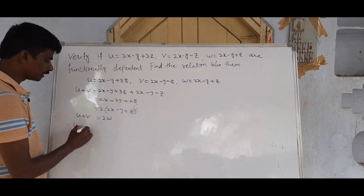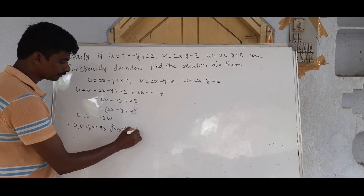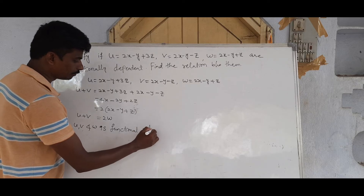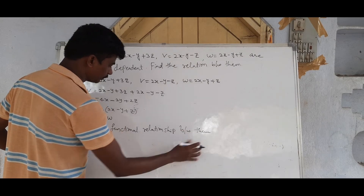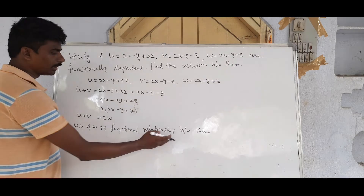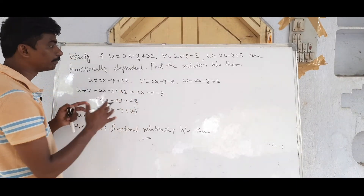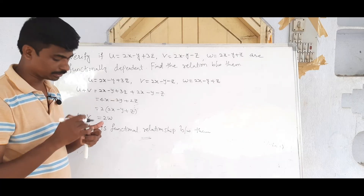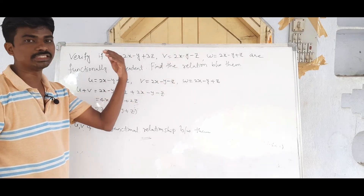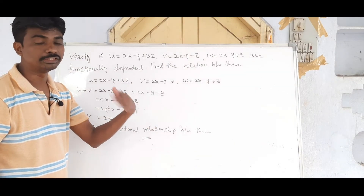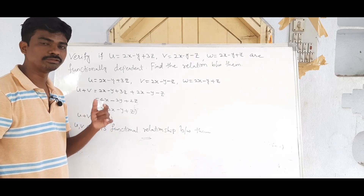Therefore u, v, and w are functionally dependent, and the functional relation between them is u + v = 2w. This is the most important result of this problem. Please subscribe to the channel, like and share. Thank you.